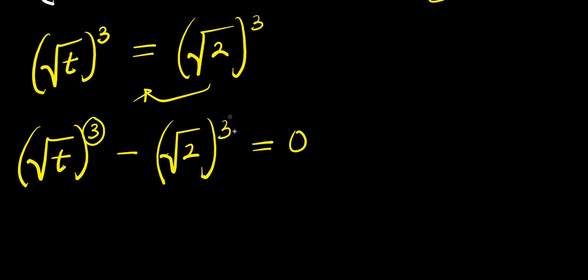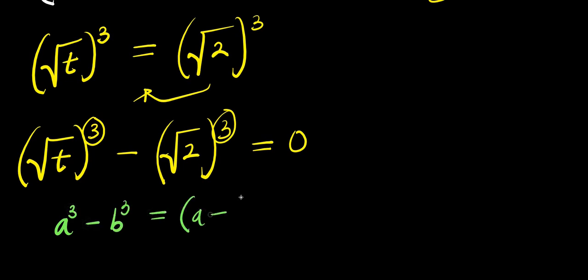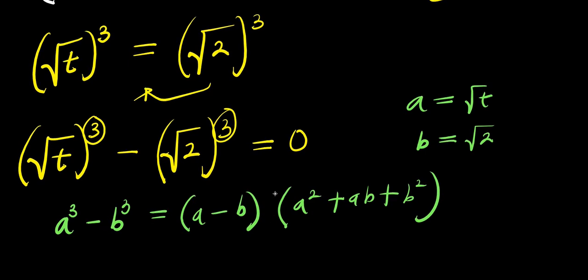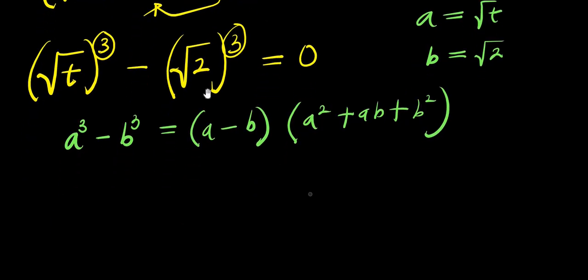We have a power of 3 here and a power of 3 here, so we can expand this using the difference of cubes identity: a cubed minus b cubed equals (a minus b) times (a squared plus ab plus b squared). Our a equals root t and our b equals root 2.